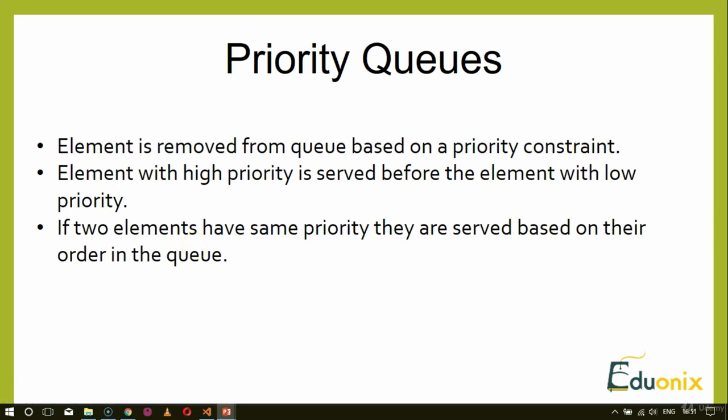So, an element with high priority is served before an element with low priority. If two elements have the same priority, they are served based on their order in the queue. That is what priority queue is all about. Now let's move to our code base where we will design an HTML file for the priority queue and the JavaScript implementation.